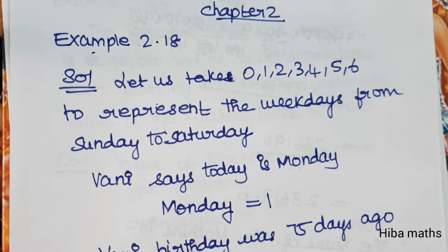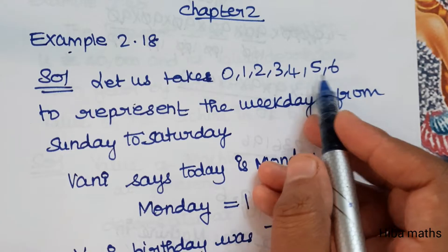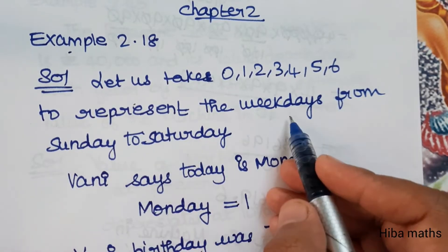It's very easy to understand the question. Let us take the numbers 0, 1, 2, 3, 4, 5, 6 to represent the weekdays.